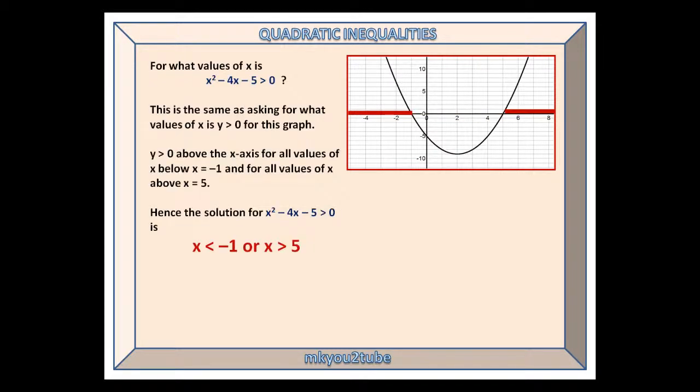For what values of x is x squared minus 4x minus 5 greater than 0? This is the same as asking for what values of x is y greater than 0 for this graph. y is greater than 0 above the x-axis for all values of x below x equals minus 1 and for all values of x above x equals 5.